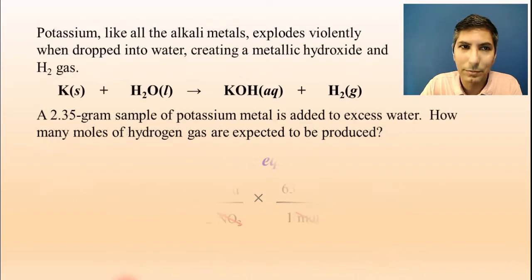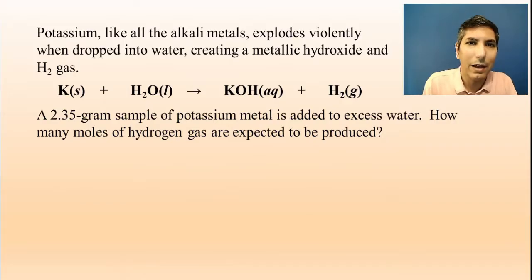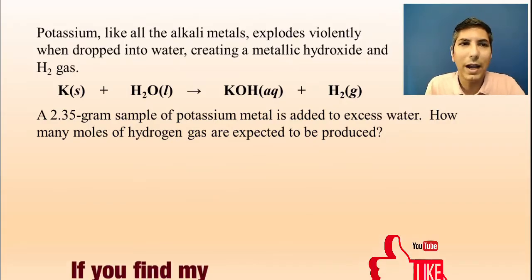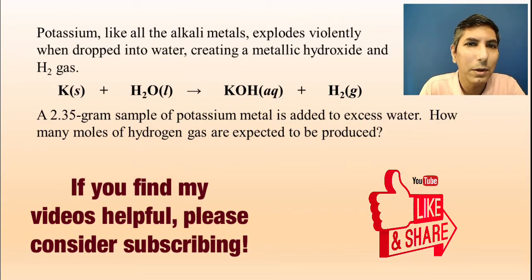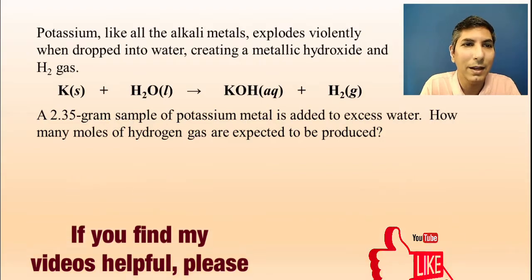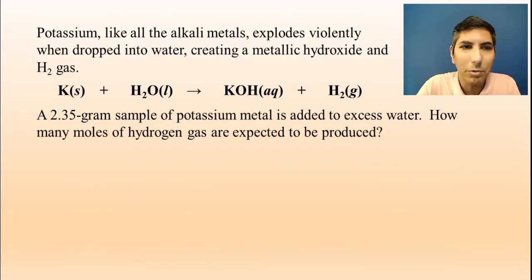Let's try another one. This one says potassium, like all the alkali metals, explodes violently when dropped into water, creating a metallic hydroxide and hydrogen gas. A 2.35 gram sample of potassium metal is added to excess water. How many moles of hydrogen gas are expected to be produced? Once again, the very first thing we have to do is balance that equation, because this only works if you have a balanced equation. So if I do this, now I have my balanced equation.